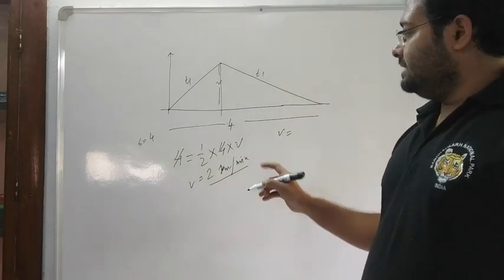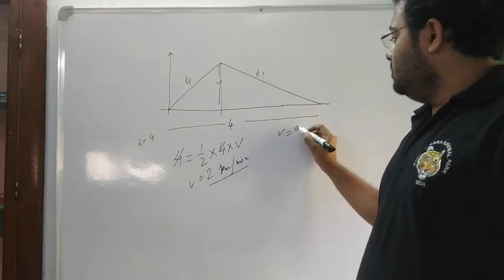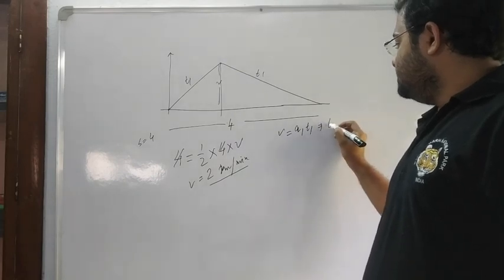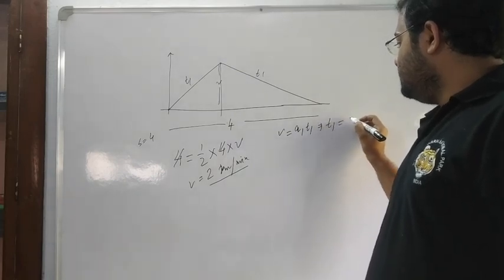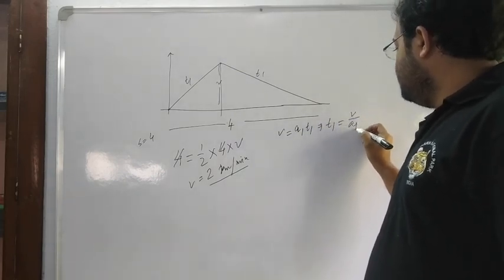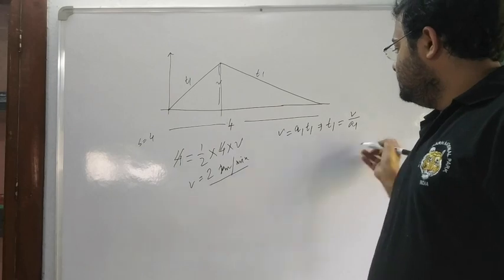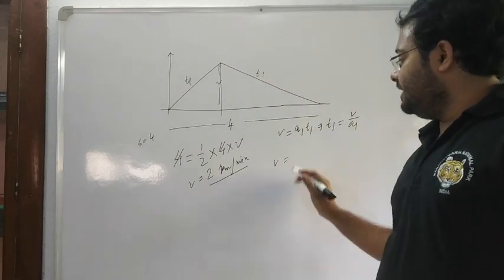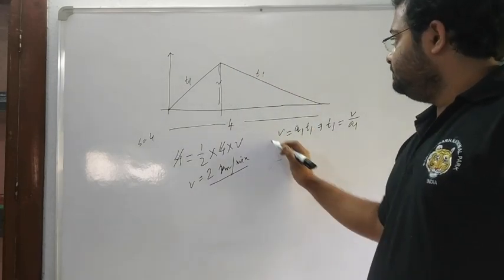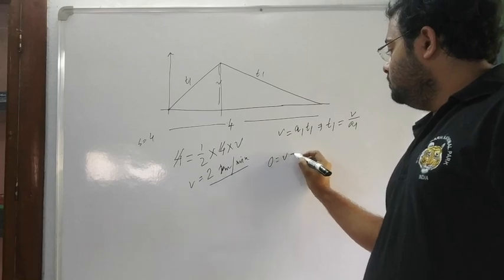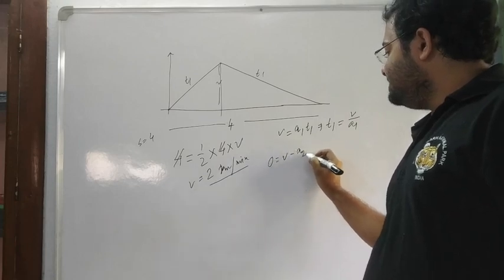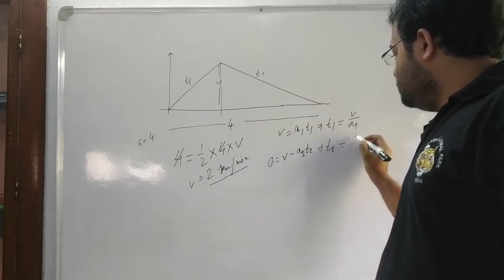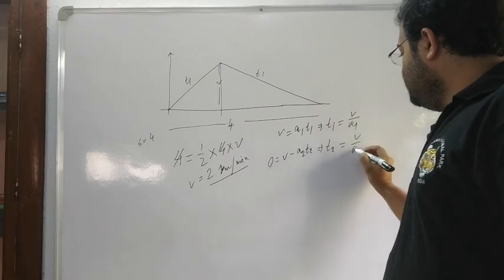V equals a1 t1, so t1 equals v by a1. For the retardation part, 0 equals v minus a2 t2, so t2 equals v by a2.